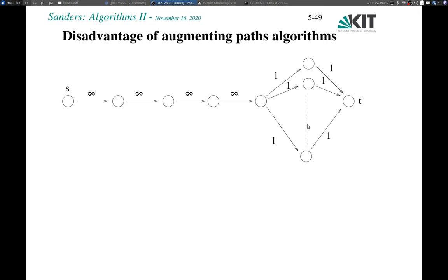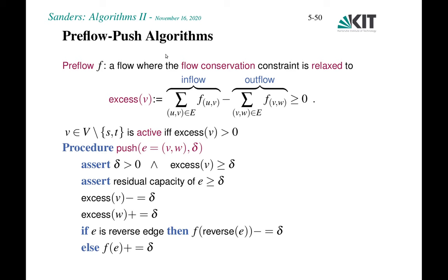We would only need to look for the short paths. Indeed, we will see a family of algorithms today that achieves this and also has better worst-case bounds than augmenting path algorithms. These algorithms are called preflow push algorithms.